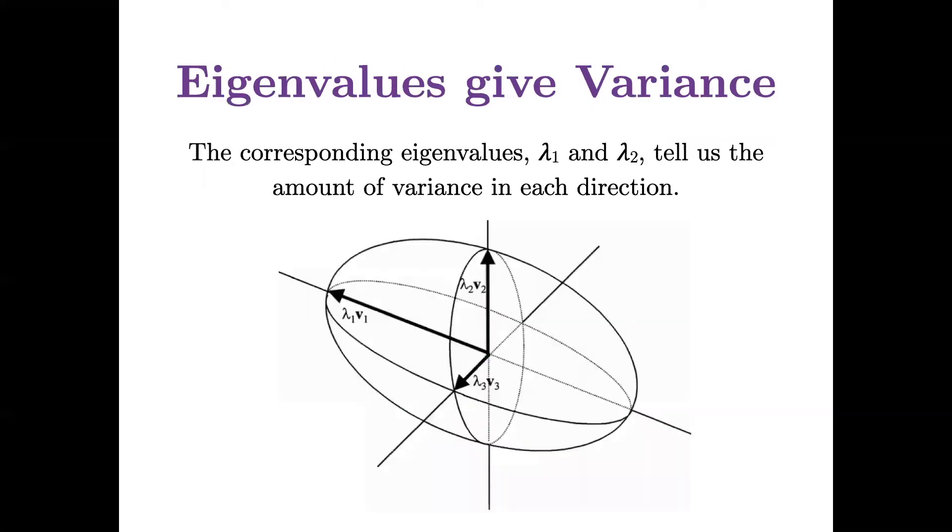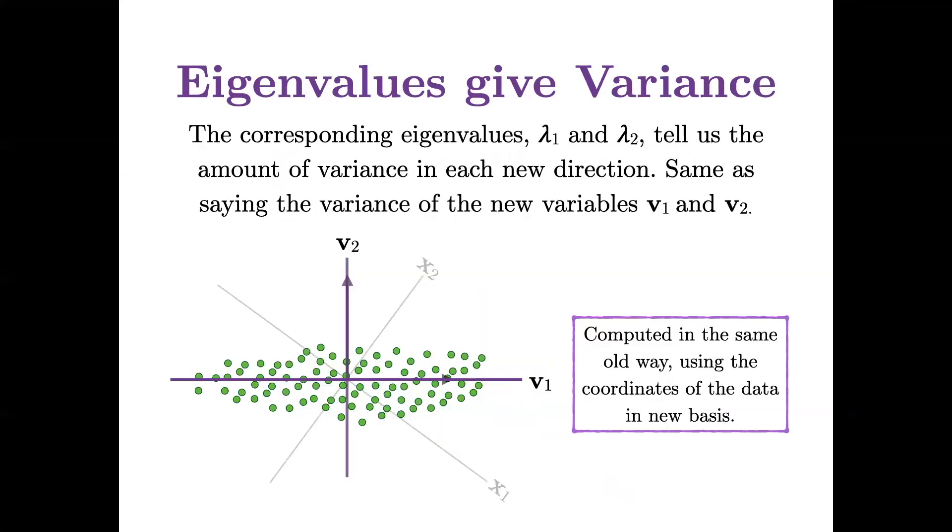So now we get to this fact that the eigenvalues actually tell us the amount of variance in each direction. So here, when we had this picture, those corresponding eigenvalues lambda 1 and lambda 2 will tell us how much of the variance of the data is in each of the new directions. This is the same as saying, it's the variance of the new variables v1 and v2.